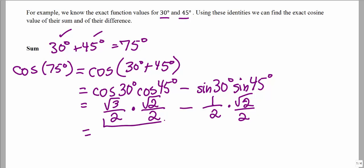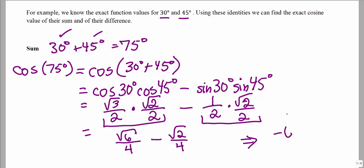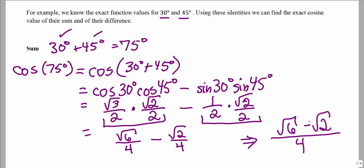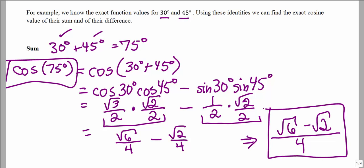We multiply according to order of operations — multiplication before subtraction. So we multiply across the first two fractions, multiply across the second two fractions, and then combine them into one fraction. So square root of 6 over 4 minus square root of 2 over 4 — they have the same denominator, so we keep the denominator and combine the numerators. Cosine of 75 degrees equals the exact value of square root of 6 minus square root of 2, all divided by 4.